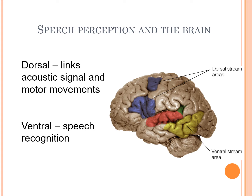Similar to what we've seen with vision and hearing, we have a dorsal stream and a ventral stream. In speech, the dorsal stream is more like a 'how' pathway — it links acoustic signal to motor movements. There's actually an aspect of speech perception where in our minds we are moving our articulators in order to understand speech. Ventrally, we see the ventral stream handling speech recognition.